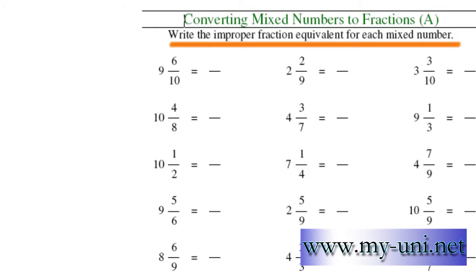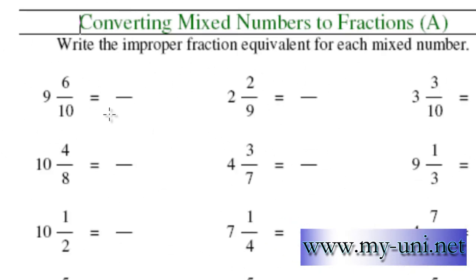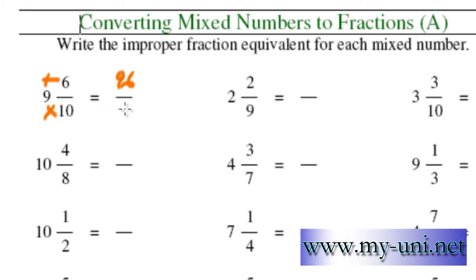To convert these mixed fractions into improper fractions, the rule is quite simple. You multiply the denominator by the whole number, and whatever the answer is, you add that answer to the numerator. So 10 times 9 is 90. 90 plus 6 would be 96. And you write down 96 over 10 as the improper fraction for this mixed fraction.